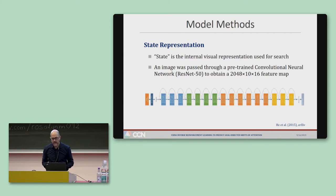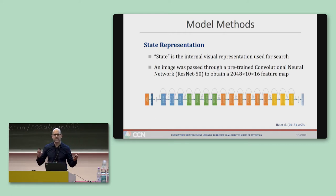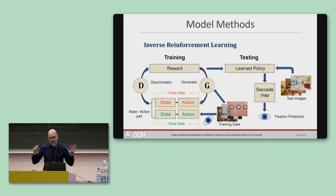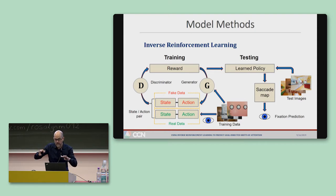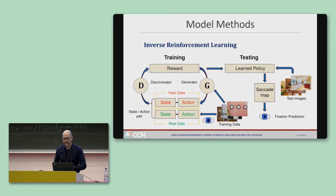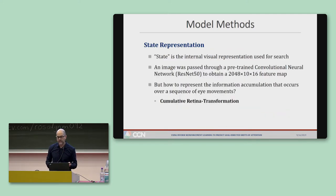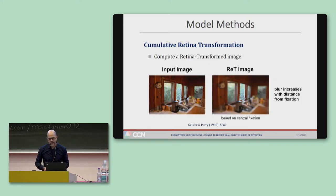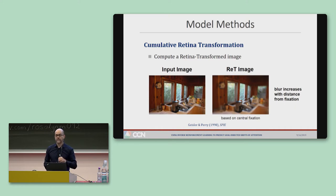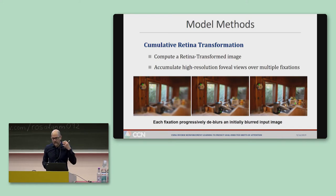To obtain our core state representation, we pass each image through a pre-trained ResNet-50, which gives us a reasonably sized feature map output. Because we also have eye data for each training image, we needed some way to integrate these fixations with the visual input, since each fixation is changing the state. What we came up with is something we're calling a cumulative retina transformation, which involves computing a retina-transformed image blurred to approximate the loss of resolution that occurs in the visual periphery — so our model has a simple foveated retina.